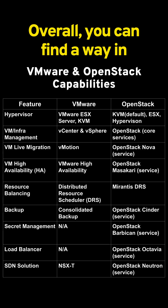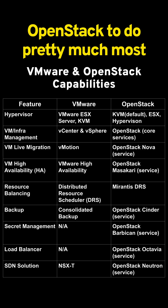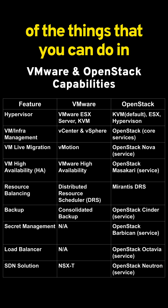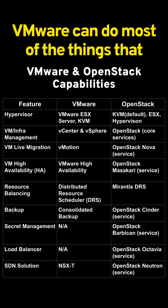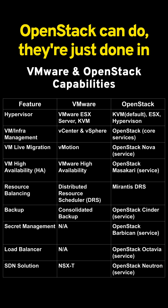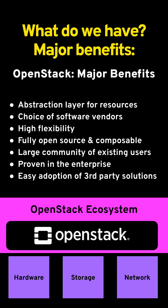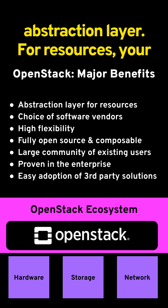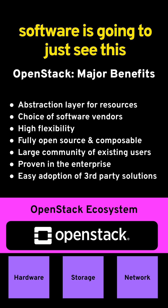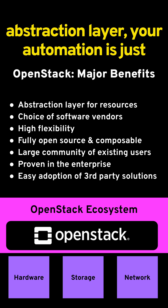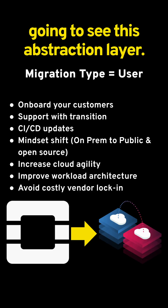Overall, you can find a way in OpenStack to do pretty much most of the things that you can do in VMware. VMware can do most of the things that OpenStack can do. They're just done in a slightly different way. What are the major benefits? An abstraction layer for resources — your software and your automation are just going to see this abstraction layer.